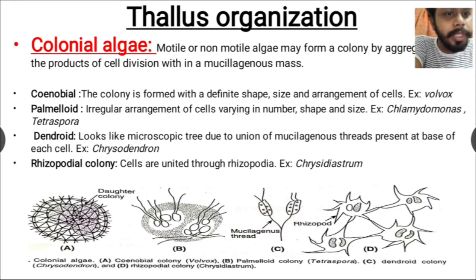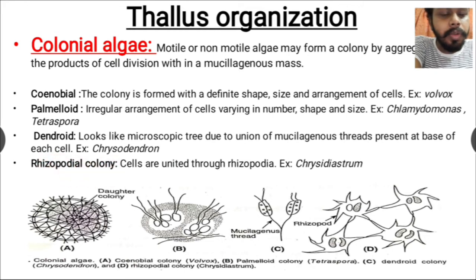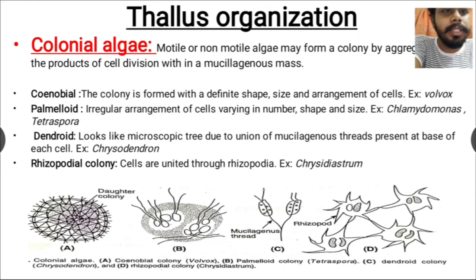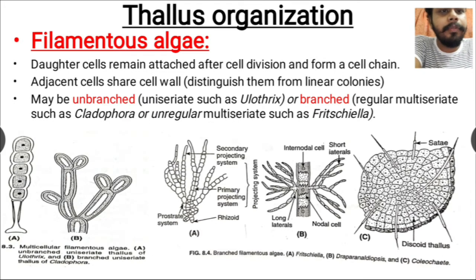The last type of colonial algae is the rhizopodial colony, where the cells are united through rhizopodia. All the cells present in the colony are connected to each other by rhizopods.